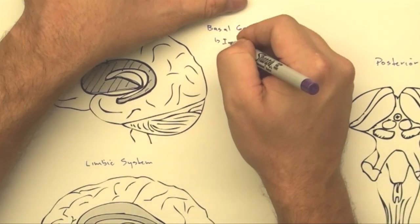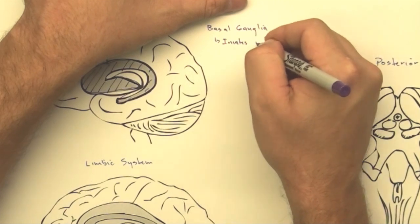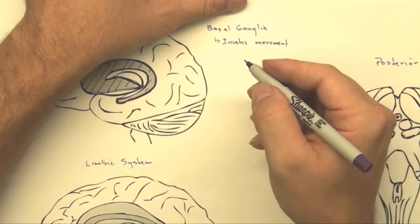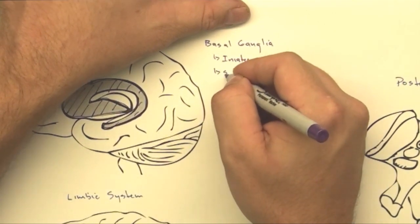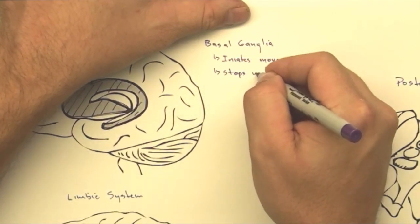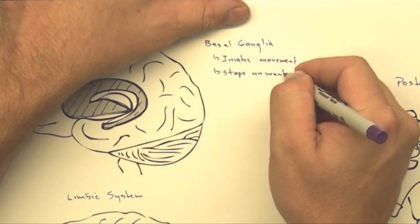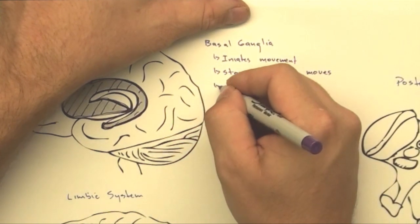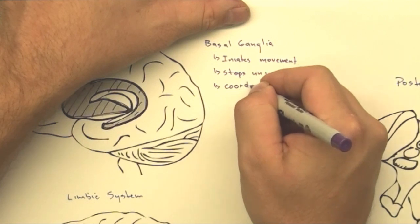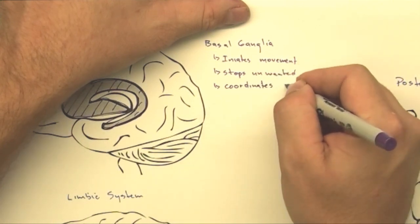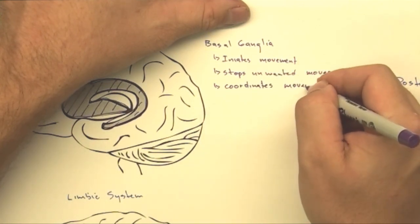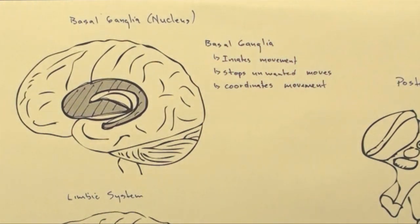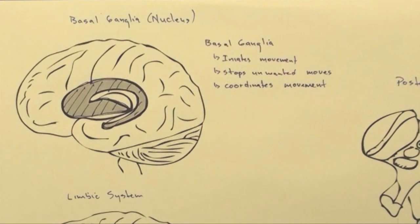Because what it does is initiates movements. So before you actually move something, the last person to give you the green light is basal ganglia. It stops unwanted movements. And it coordinates movements. And by coordinates, I don't really mean like muscle coordination. I mean it brings in all the things that you need to consider before you have some muscle action.